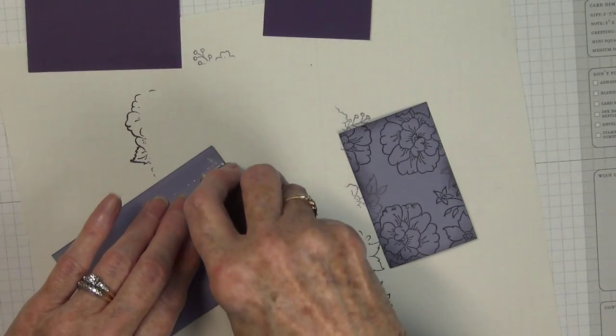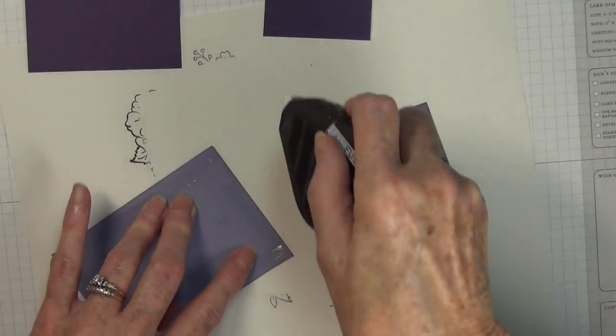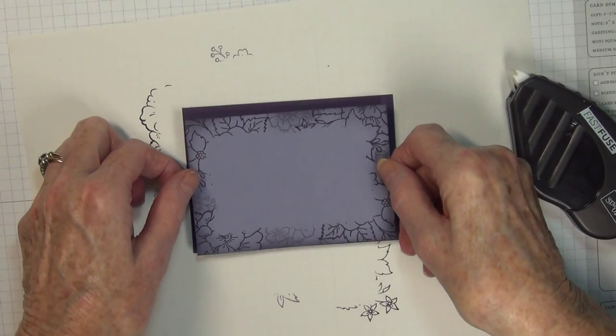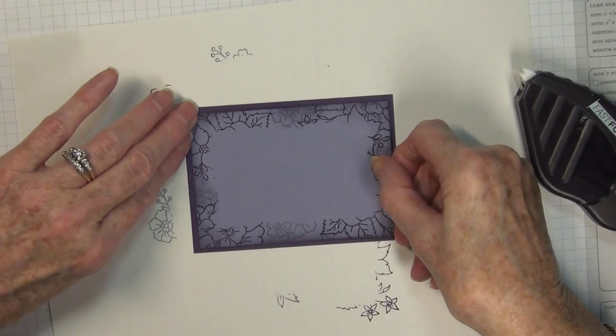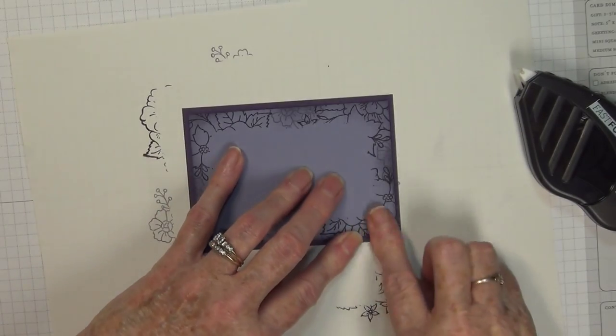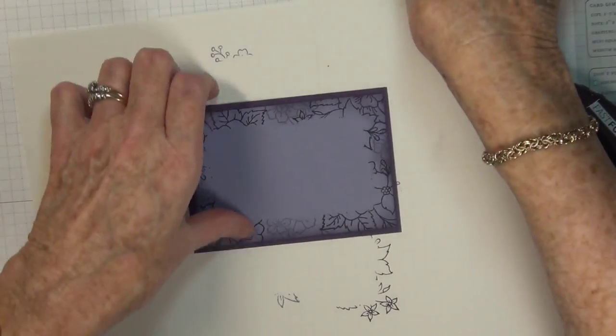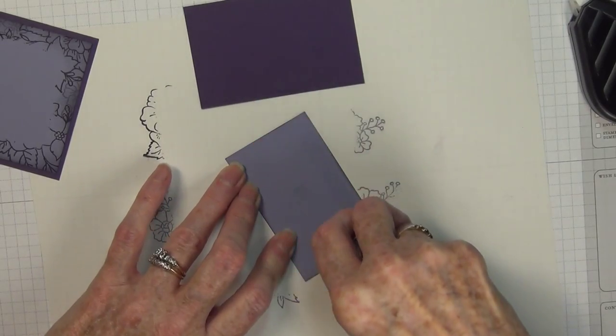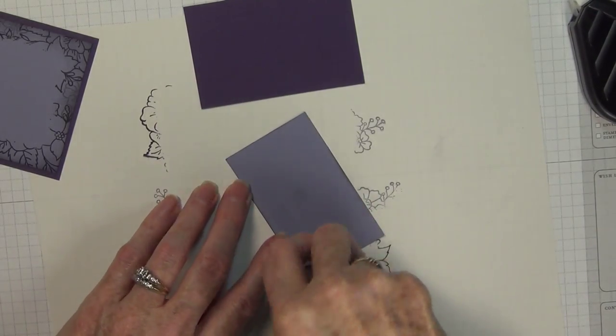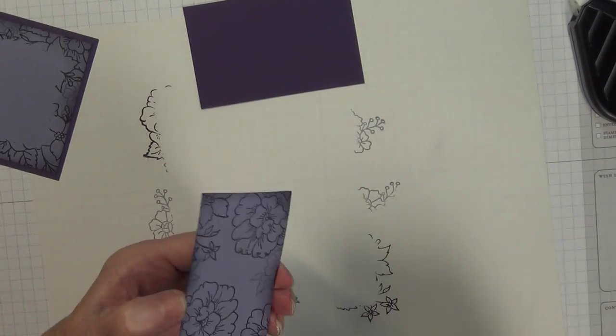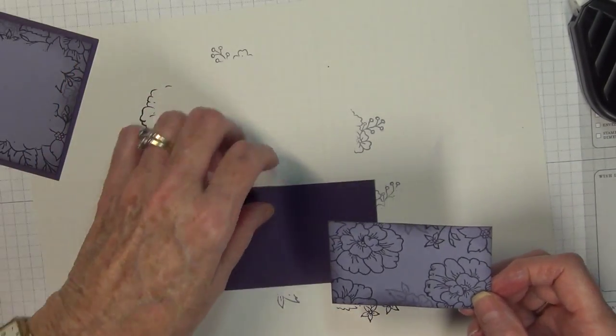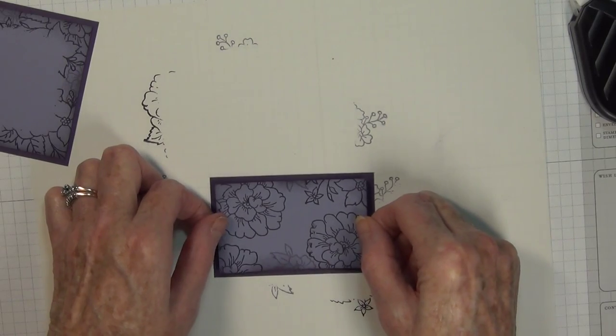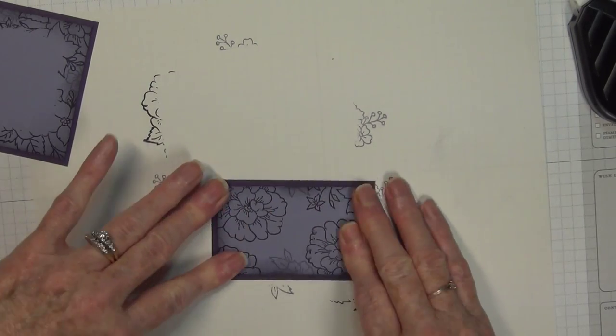I thought I would try using our Fast Fuse on this one. There's a little learning curve to that and I'm still working on it, but it really does adhere well. I love the way that it bonds. Now I will go ahead and do my smaller panel.